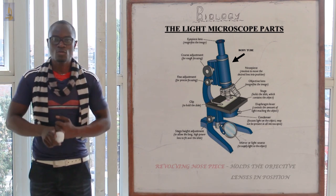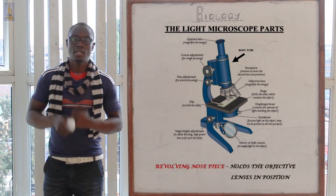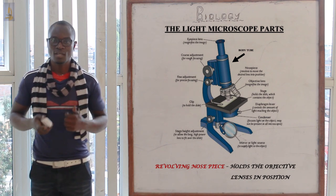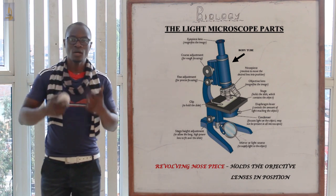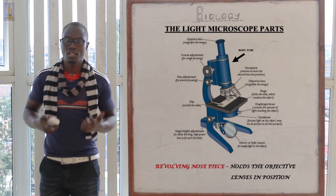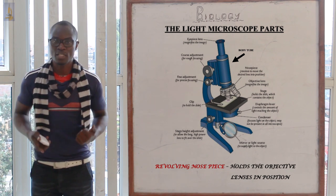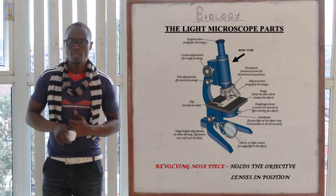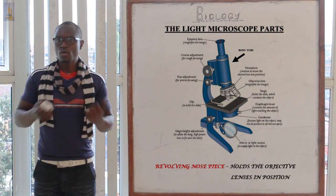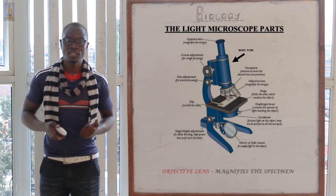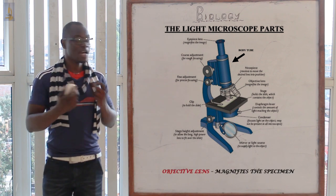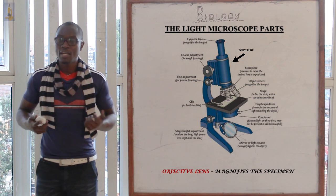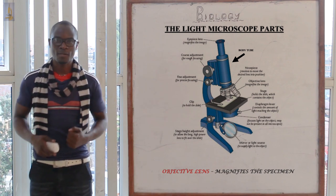The revolving nosepiece contains different objective lenses and allows the turning and changing of objective lenses that the user wishes to use. The objective lenses, just like the eyepiece lens, function to magnify the specimen.